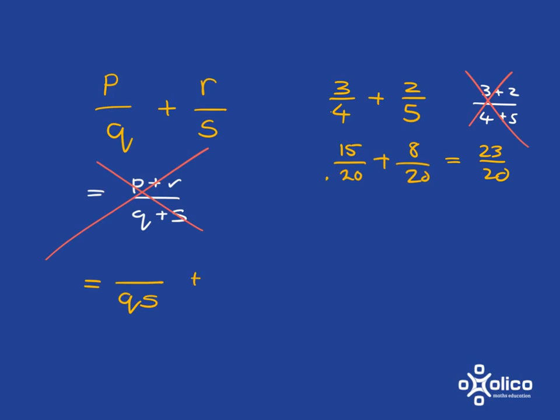And so both of our fractions now have to have a q and an s in their denominator. This one here already had the q, but it's missing the s. So we've multiplied by s. If we do that to the denominator, we have to do that to the numerator and so we'll get ps.